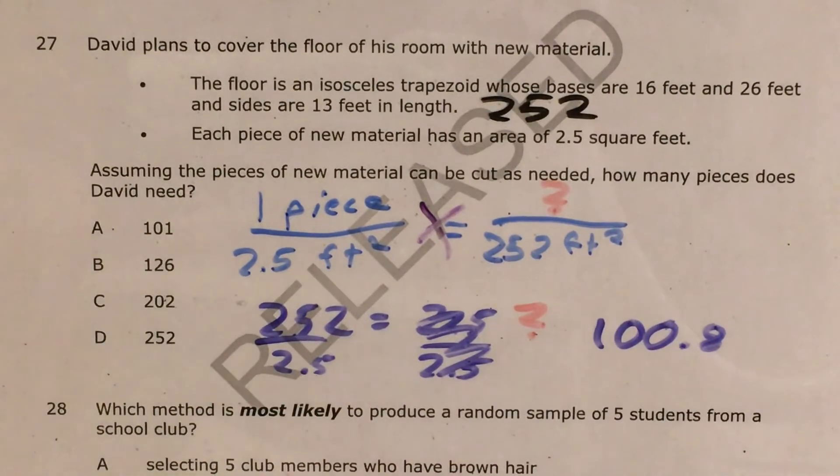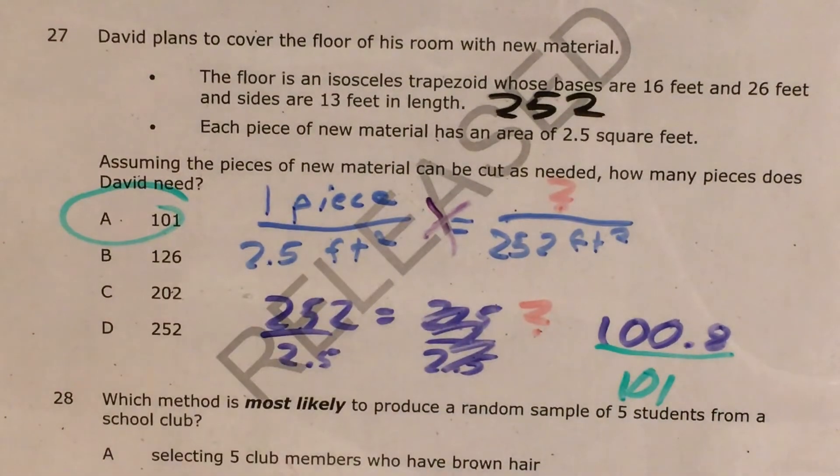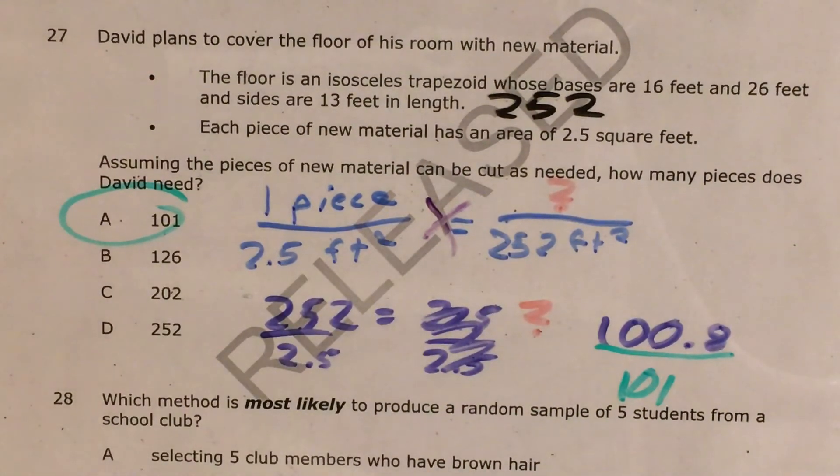And none of my answer choices are exactly 100.8, but this number is closest to 101, which does match choice A. So A is my answer. It takes 101 pieces, just about 101 pieces, to cover the floor of that isosceles trapezoid. Great.